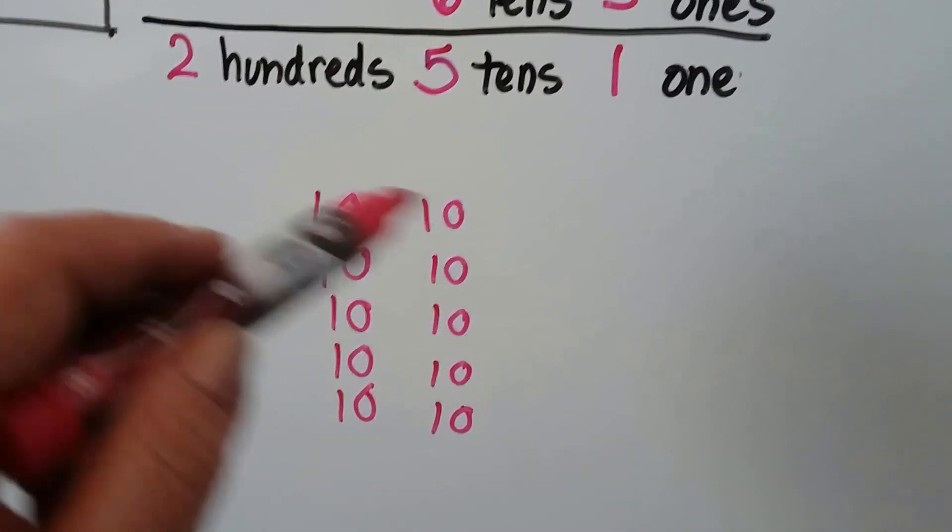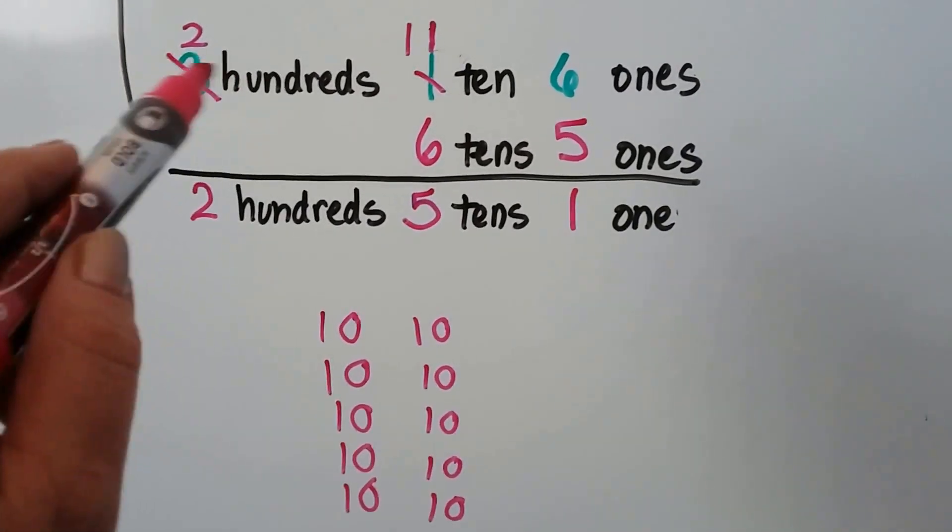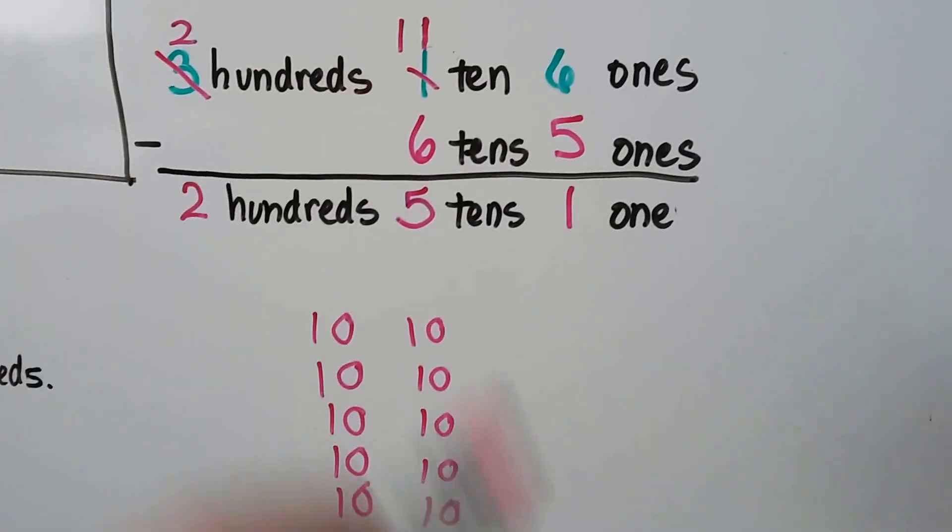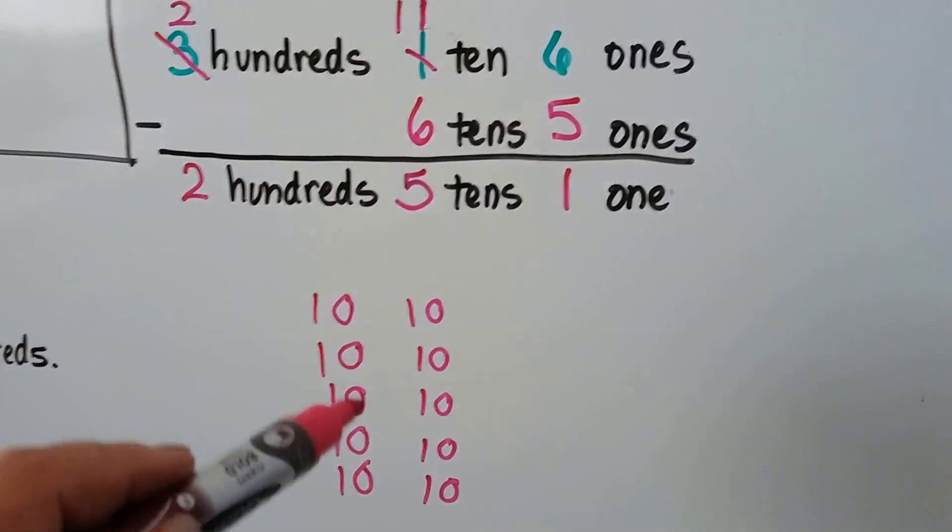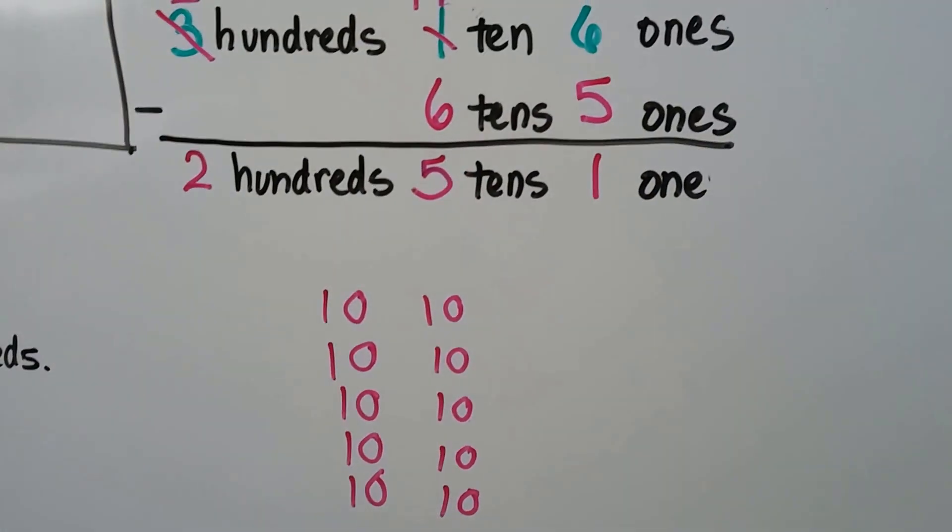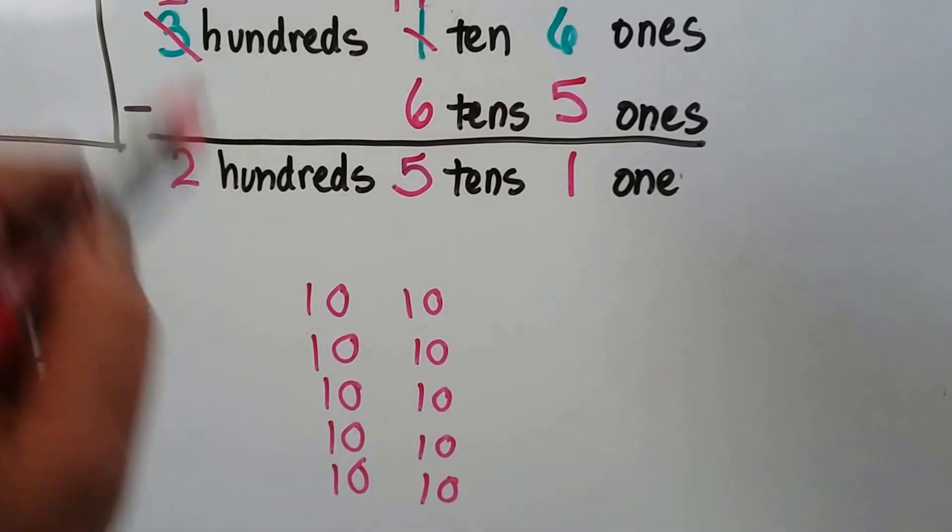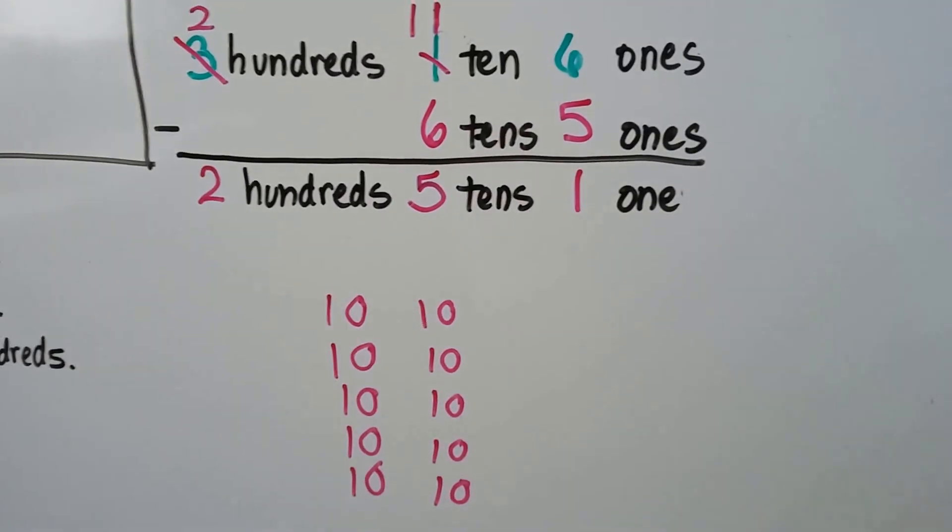So we have 10 tens, and that's 100. We just take that away from the hundreds place and give it to the tens place. We already had 1, so now that 10 tens plus 1 ten made the 11 tens. See? We just borrowed it from that hundreds place. We took it from that hundreds place and it became a 2.